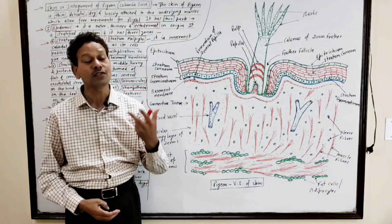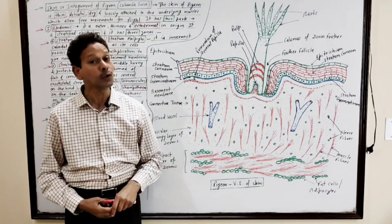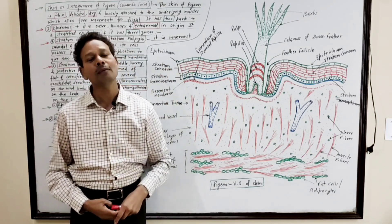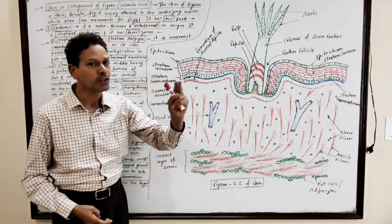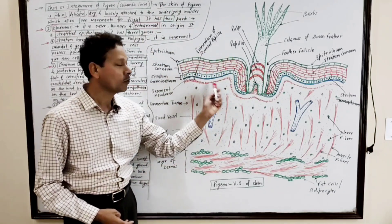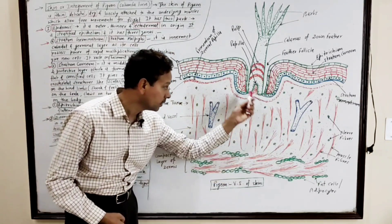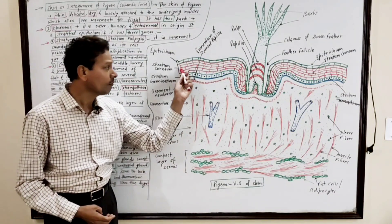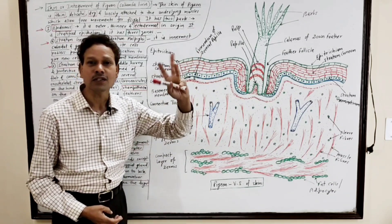In the case of birds, the skin is thin, dry, and delicate, and it is loosely attached to the underlying muscles, which allows free movements for flight. The skin or integument of pigeon Columba livia has two parts: the outer thin part is the epidermis, and the inner thick part is the dermis.